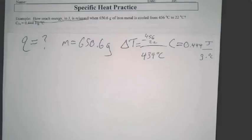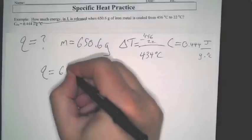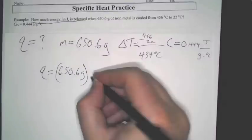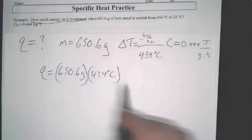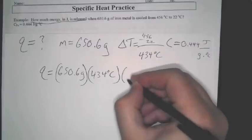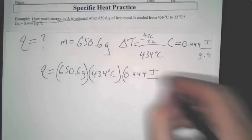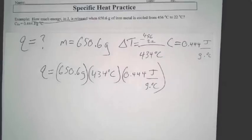Or at least our formula to solve using specific heat. But we want Q. So all you do is just literally plug everything in. Q is equal to 650.6 grams. Delta T is 434 degrees Celsius. Now again, the order. Remember that the order that you write these in is completely up to you. Since you're multiplying, the order does not matter. So you do that. You multiply everything together.